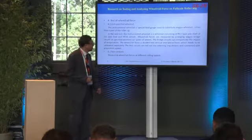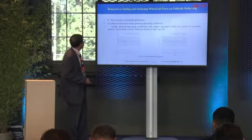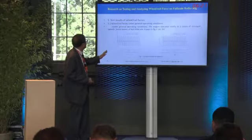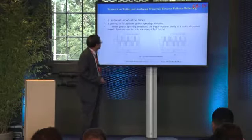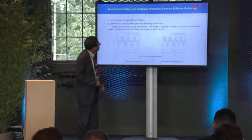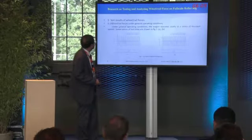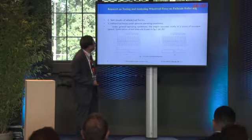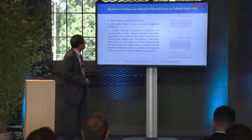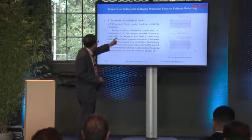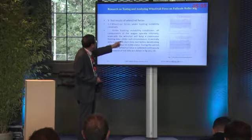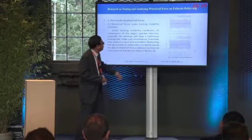Test conditions: measuring wheel rail forces at different rolling speeds. The test results under general operating conditions show that the wagon operates stably at a series of constant speeds; some pieces of test data are shown in figure one. Under hunting stability conditions, all components of the wagon operate intensely, maintaining a continuous hunting state. Some pieces of test data in hunting instability are shown in figure two. Please refer to table one for some indexes of the test data.